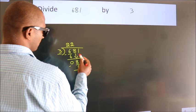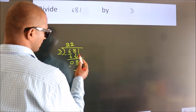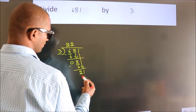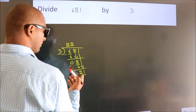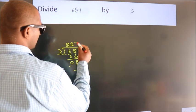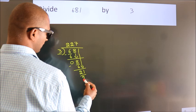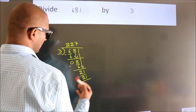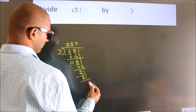After this, bring down the beside number. So, 1 down, giving us 21. When do we get 21 in the 3 table? 3 times 7 is 21. Now we subtract. We get 0.